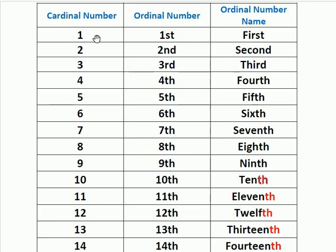Cardinal number 1: we get its ordinal number by adding 'st' after the number 1, and we read it as first. Its ordinal number name is f-i-r-s-t, first. Cardinal number 2: we get its ordinal number by adding 'nd' after 2, and we read it as second. Cardinal number 3: its ordinal number name is t-h-i-r-d, third.